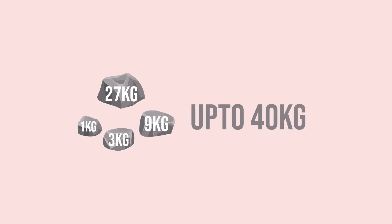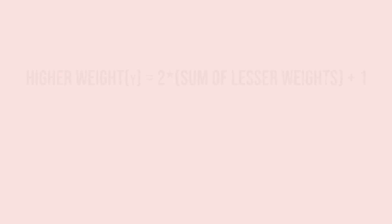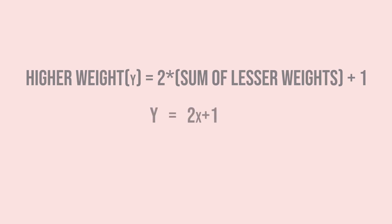Likewise, the value of each higher weight will be obtained when we double the value of the maximum weight that could be acquired with the help of all the lesser weights and add one to it. We can say that the higher weight would be obtained by the formula 2x plus 1, where x is the sum of all the lesser weights.